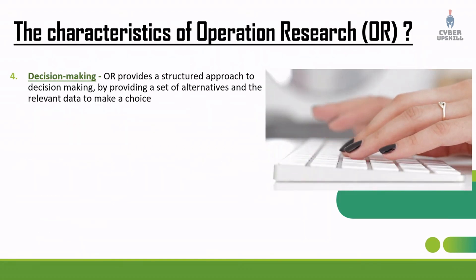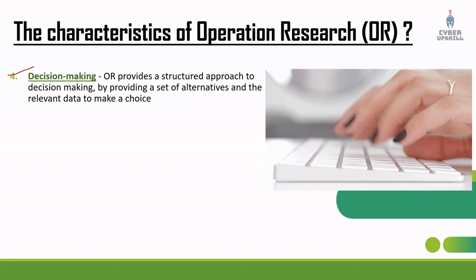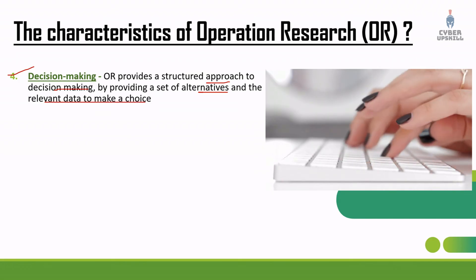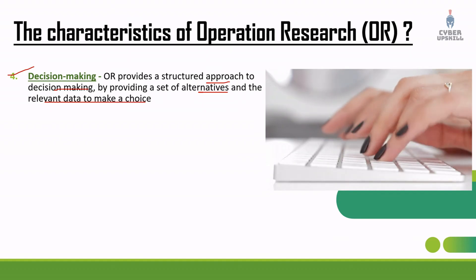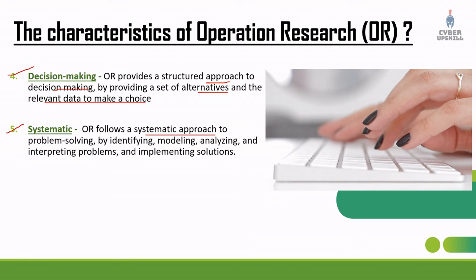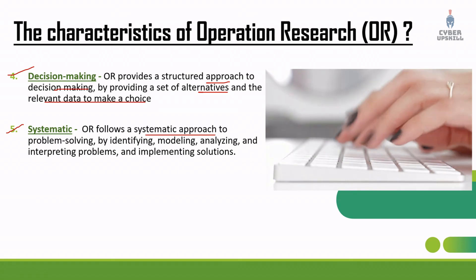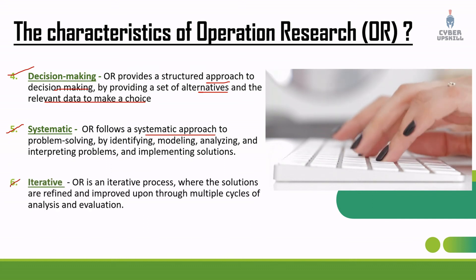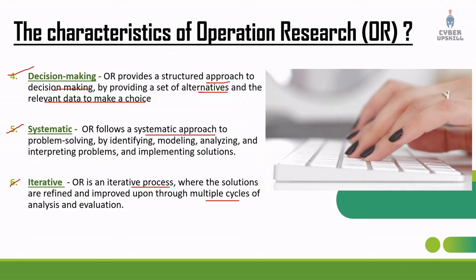The fourth characteristic is decision making. OR provides a structured approach to decision making by providing a set of alternatives and relevant data to make the best choice. The fifth is systematic — OR follows a step-by-step systematic approach to getting problems solved. The sixth is iterative — OR is an iterative process where solutions are refined and improved through multiple cycles of analysis and evaluation.